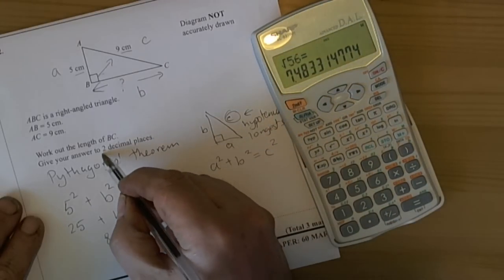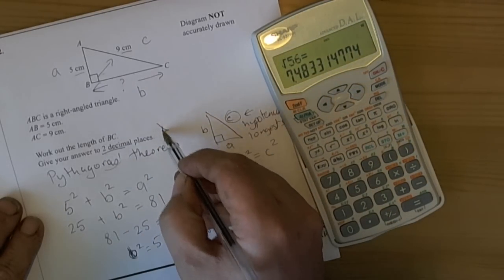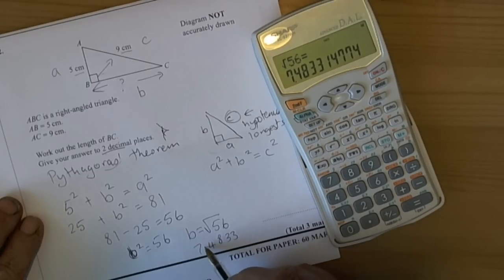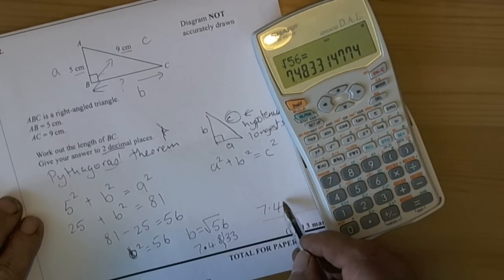Now the question asks you to give the answer to two decimal places. So that is really important that you recognize that. So this on our calculators was 7.4833. So to two decimal places means count two digits after the decimal point. So 1, 2. So we are going to cut the number there. The 3 is less than halfway up so that will stay as an 8. So 7.48 is our final answer.